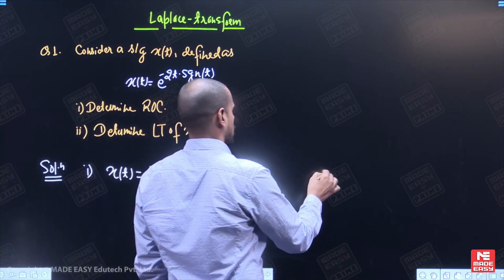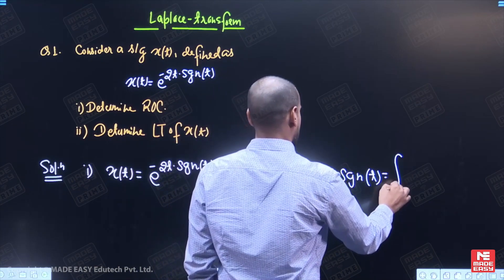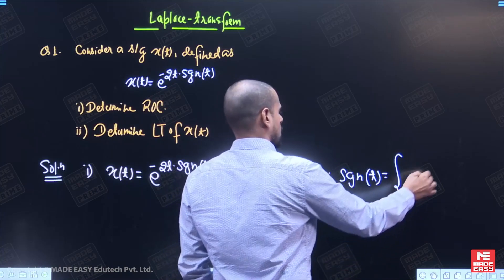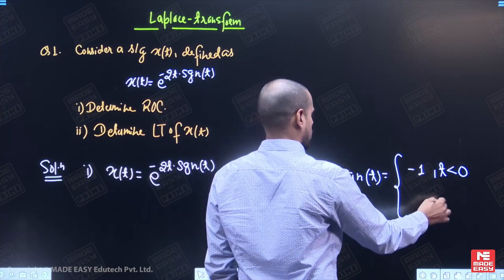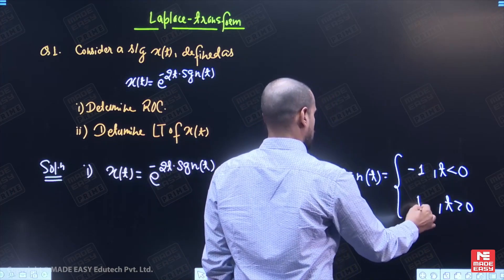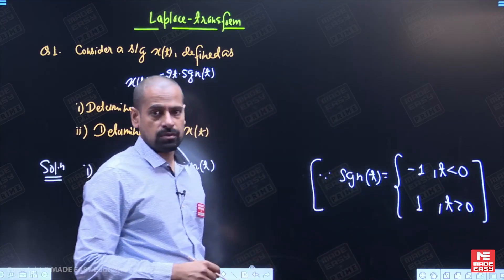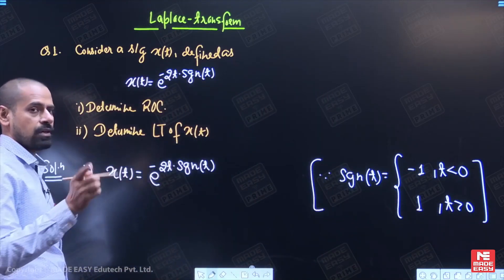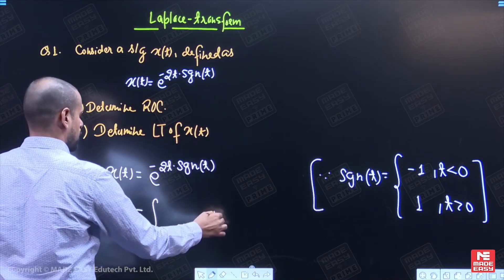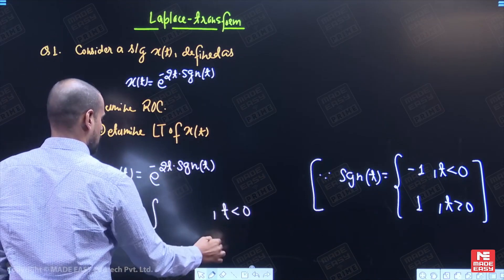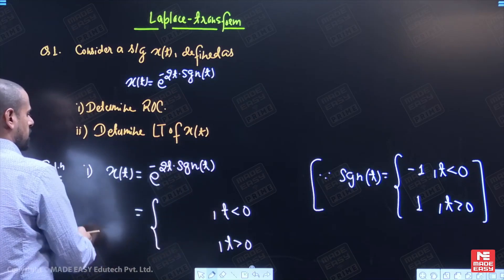Now, what are the values of signum(t) for t less than 0 and t greater than 0? As we know, for t less than 0, signum(t) is minus 1, and for t greater than 0, it is 1. So we will write down signal x(t) for two conditions: for t less than 0 and for t greater than 0.